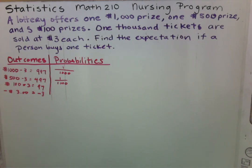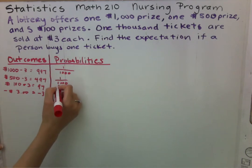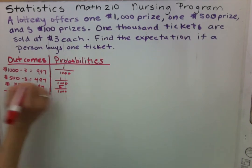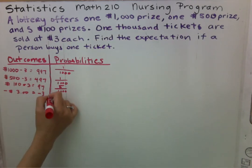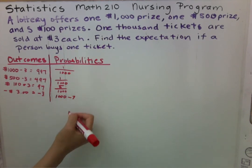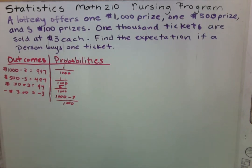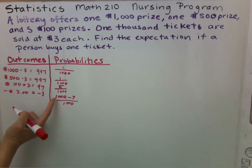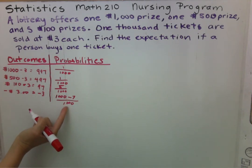To win a $100 ticket, you have five out of a thousand chances — a little bit higher. To lose three dollars, meaning you purchased a ticket and didn't win, it would be the total tickets minus the seven chances of winning those tickets over a thousand. So you have a thousand tickets but there were seven chances to win the other tickets — the winning tickets — divided by a thousand.